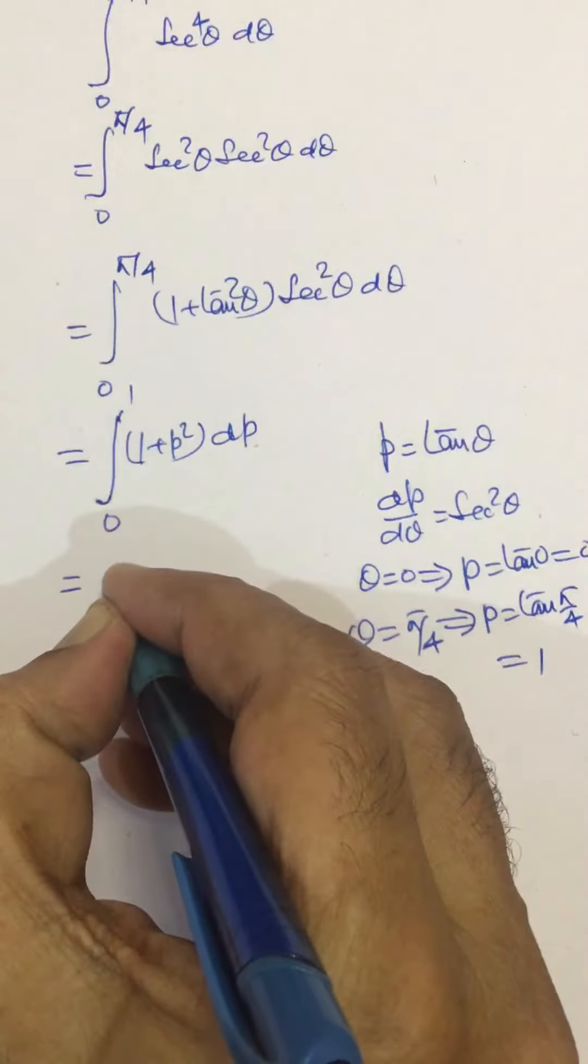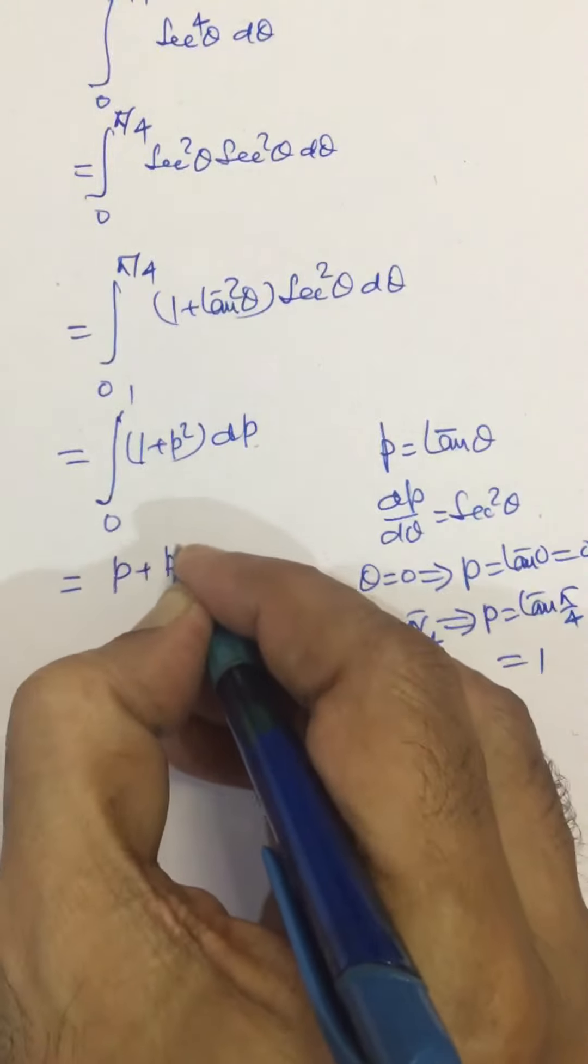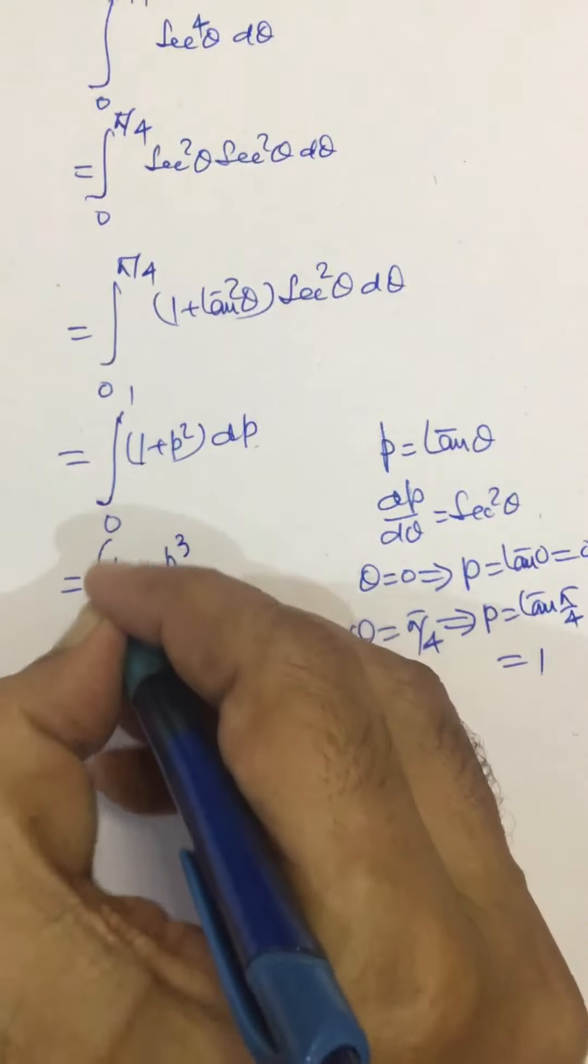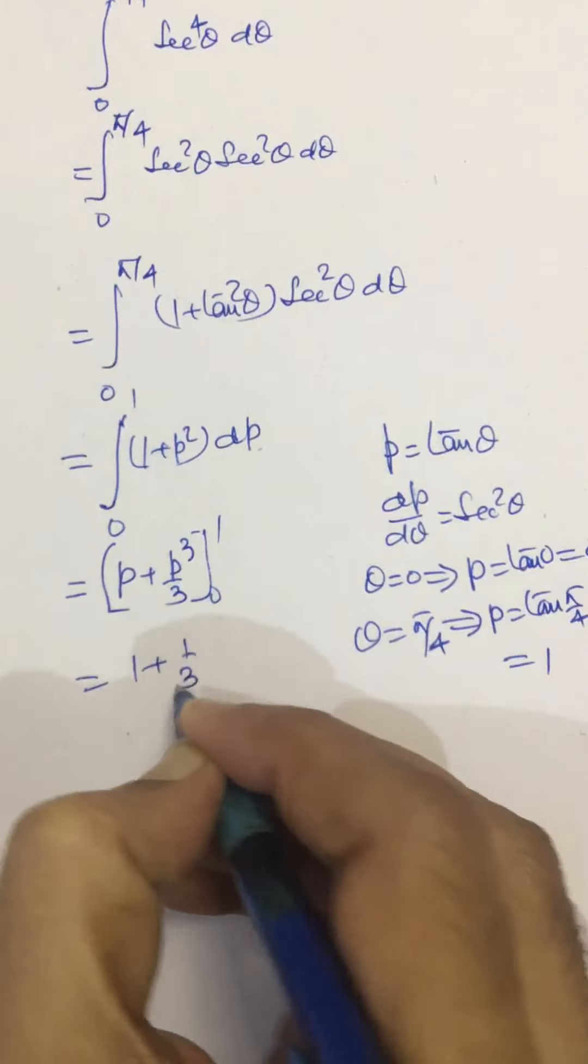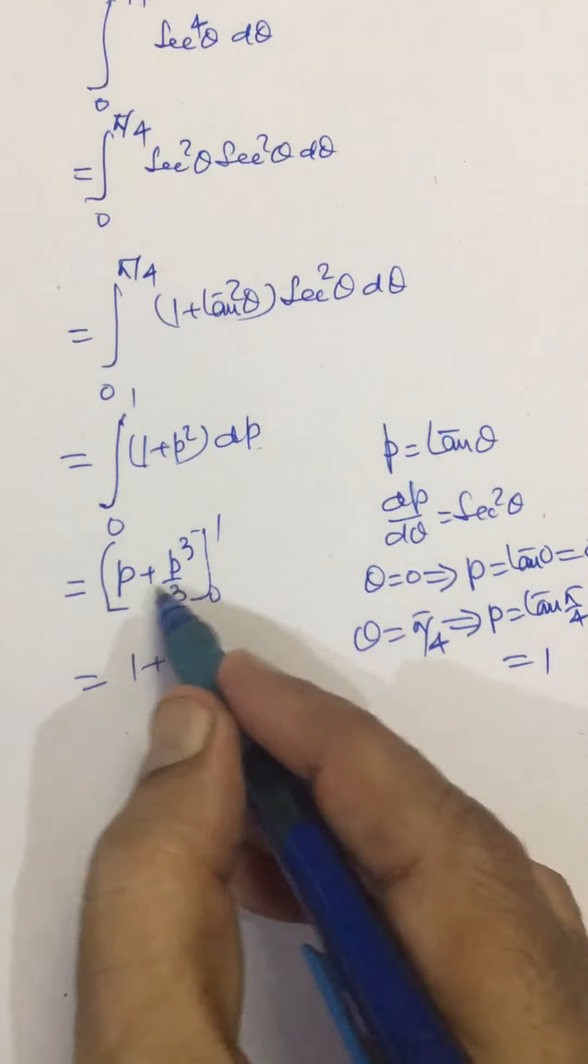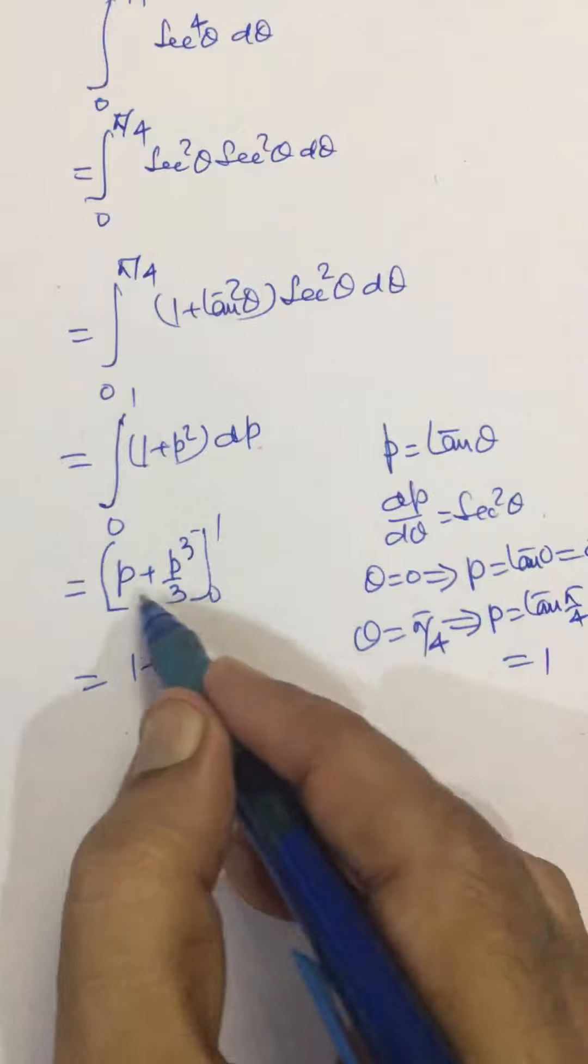When evaluated, this becomes p plus p cube by 3, and with limits from 0 to 1 becomes 1 plus 1 by 3, because this becomes 0 when p is 0.